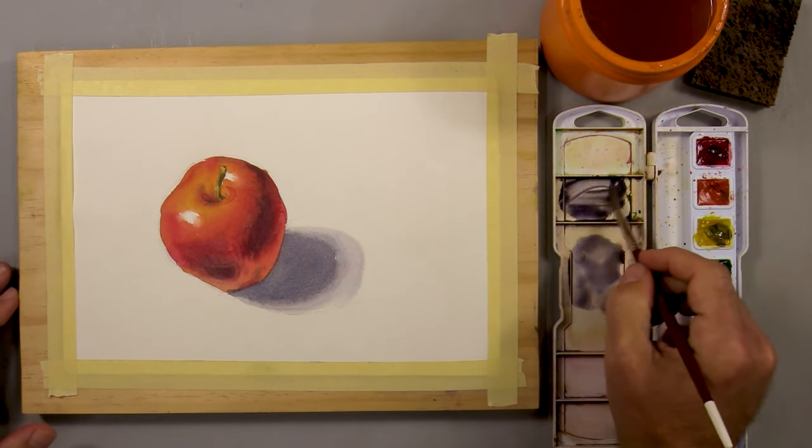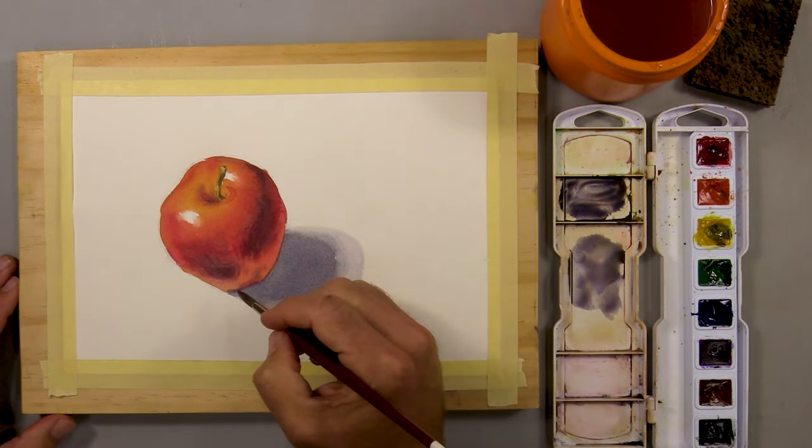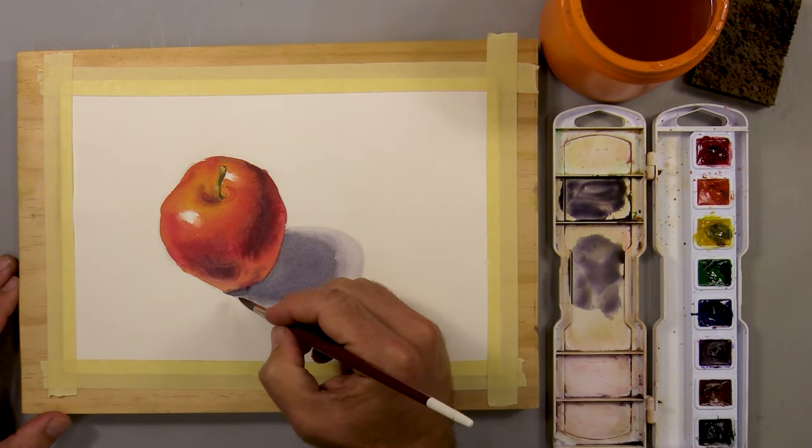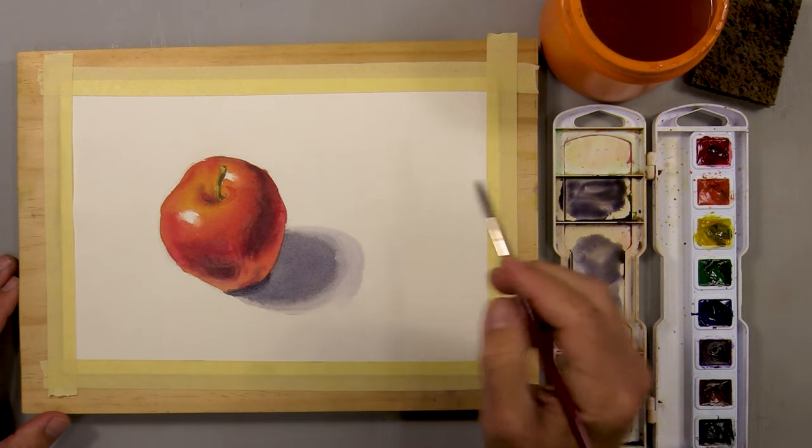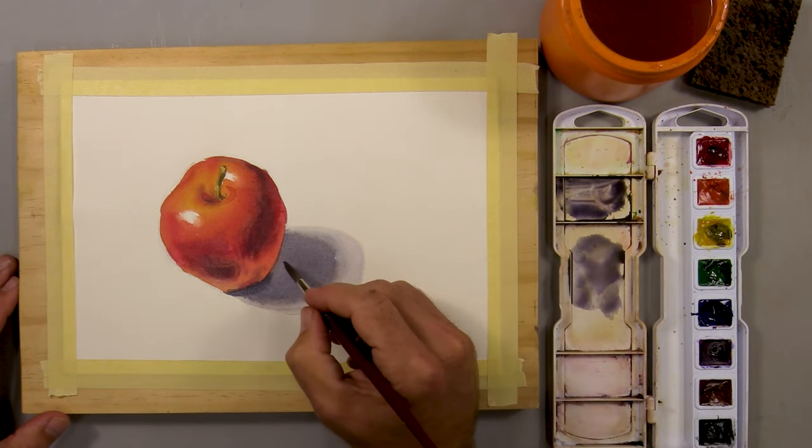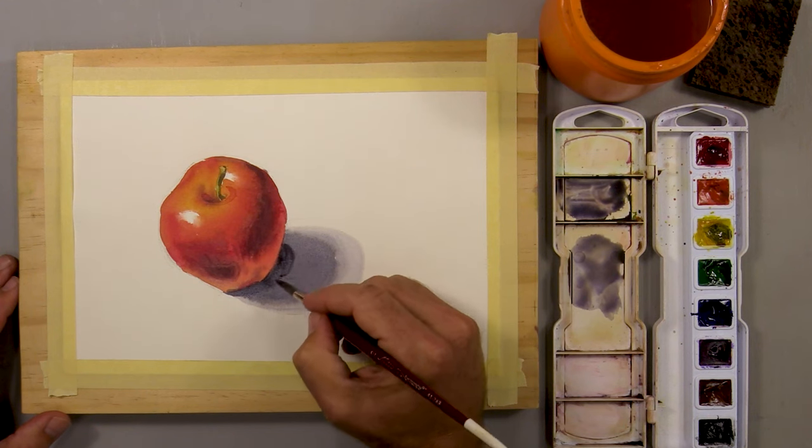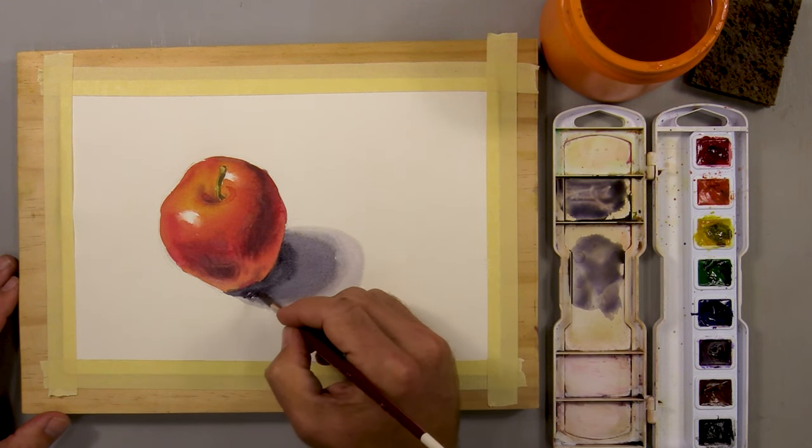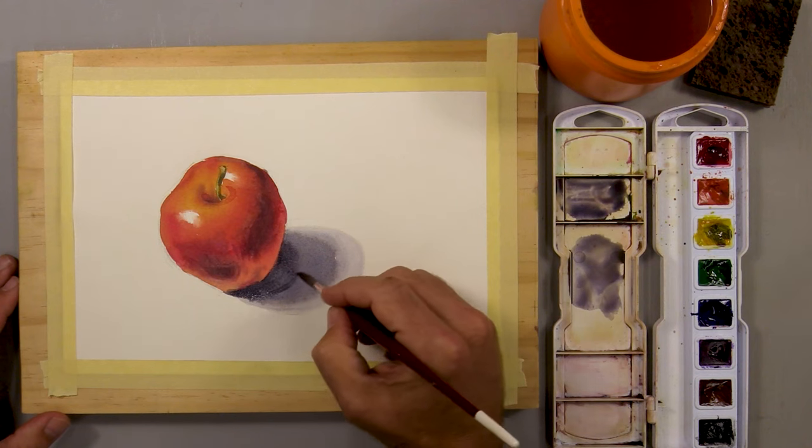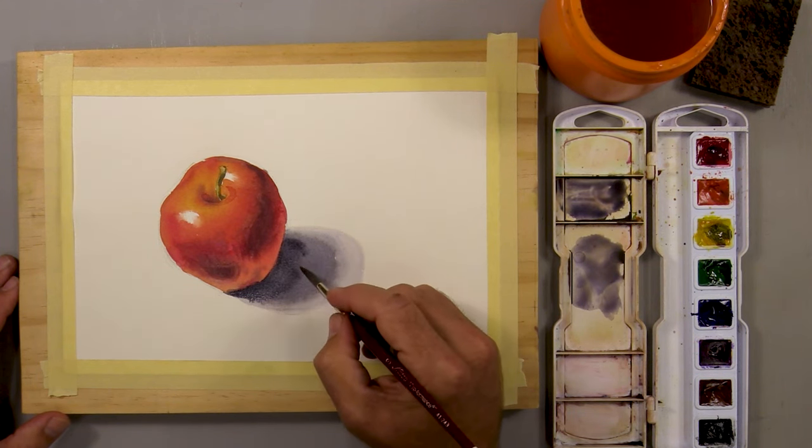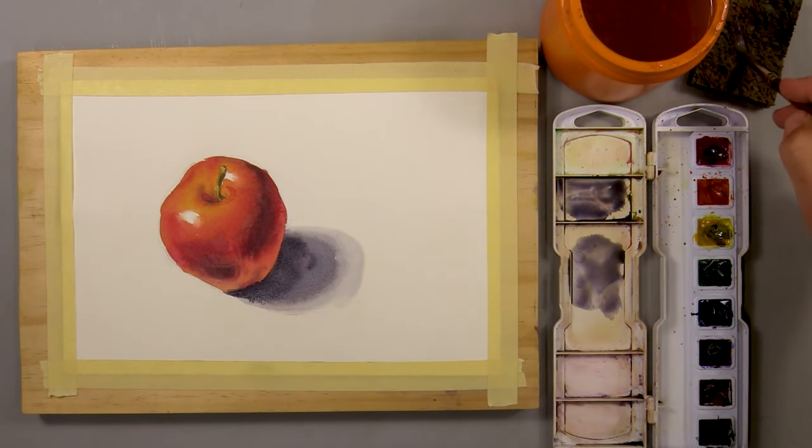Now while that cast shadow is still wet, I take my darkest value, my darkest shadow color. And I dab it in especially toward the very bottom of the apple and a little bit up the right side within that cast shadow area. This color will just bleed in to that cast shadow to create a gradation or transition from dark to light.